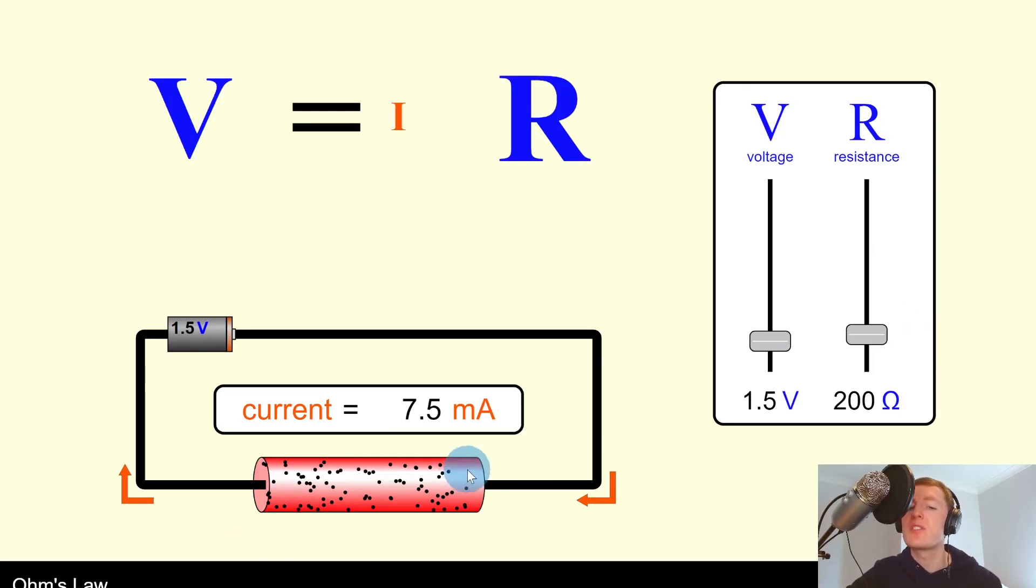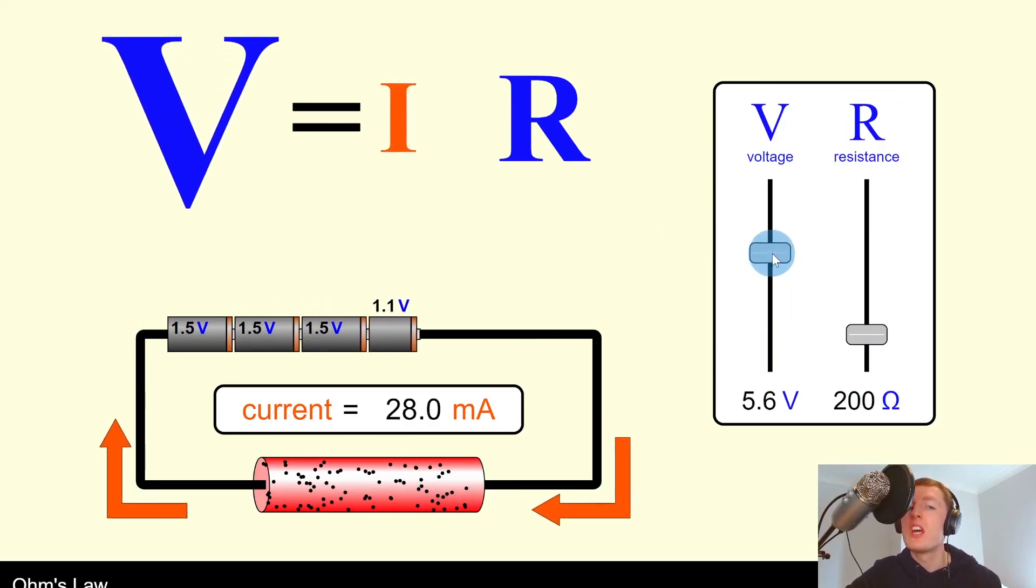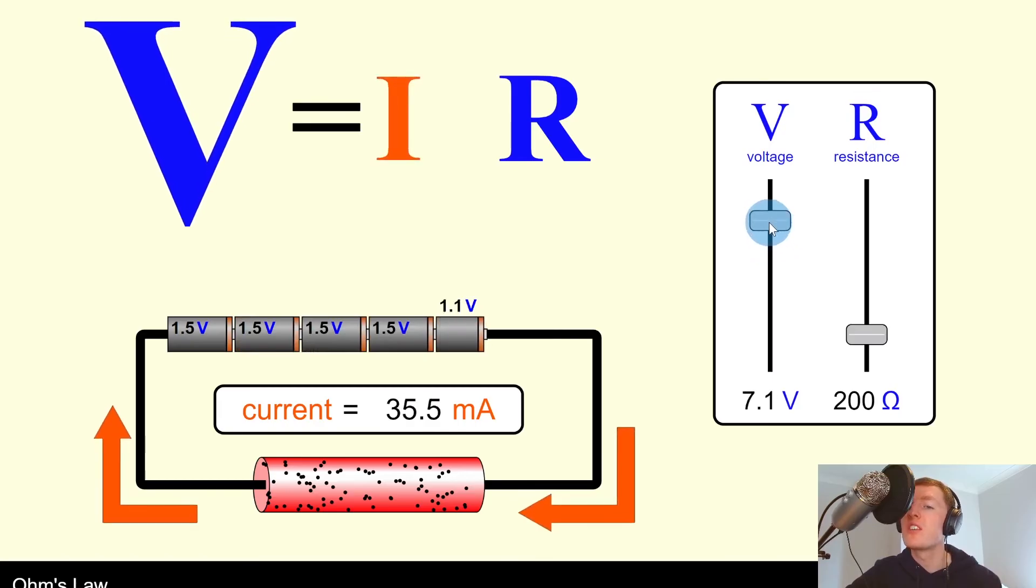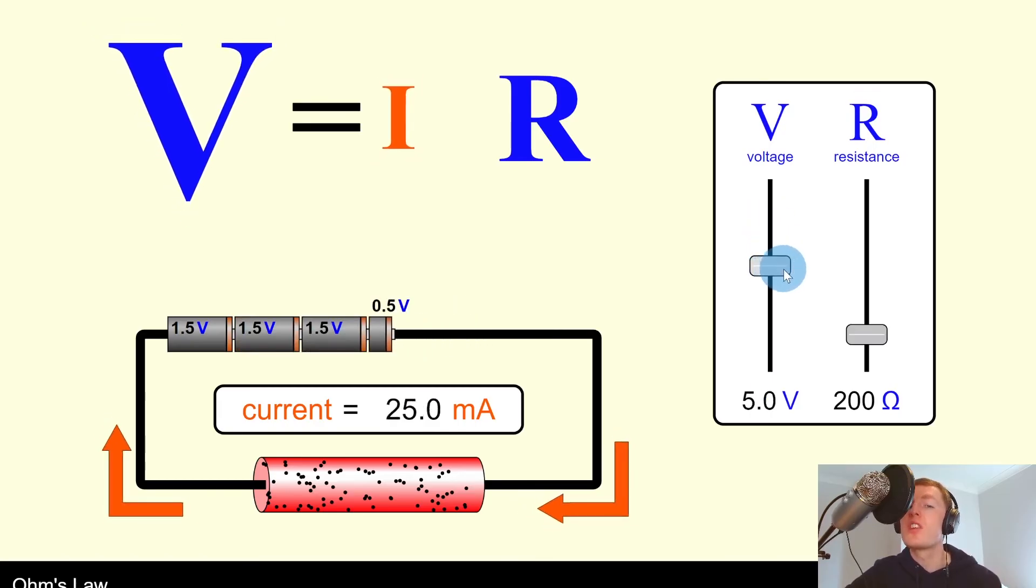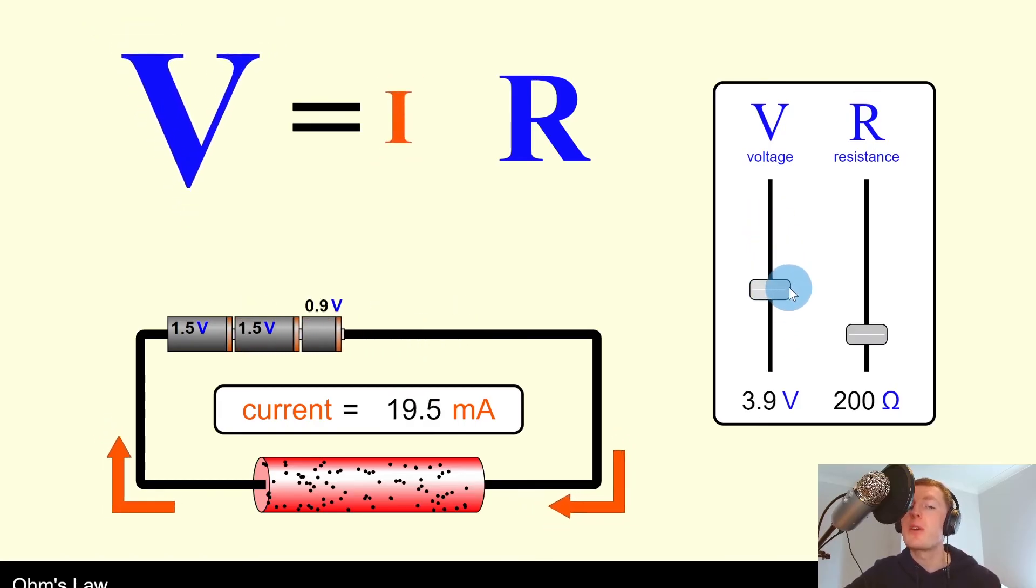If we were to keep the resistance of the resistor the same, 200 ohms in this case, just like in the Ohm's Law experiment, then you can see that as we change the voltage, the current also changes. As we increase voltage, current increases. And as we decrease voltage, the current decreases. Remember that's because these two are directly proportional to each other.